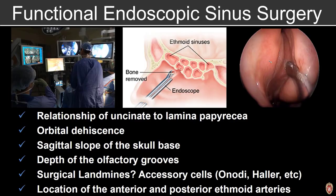Our surgery colleagues will review sinus examinations prior to functional endoscopic sinus surgery. They want to evaluate the relationship of the uncinate to the lamina papyracea, identify any evidence of orbital dehiscence, assess the sagittal slope of the skull base, look at the depth of the olfactory grooves, and ask us to help look for surgical landmines — accessory cells as well as the location of the anterior and posterior ethmoid arteries.